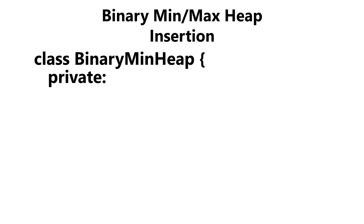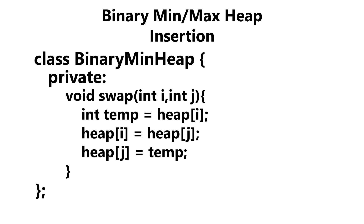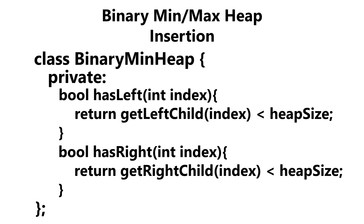We're going to have six helper methods. Our get left child method generates the left child index of the index we pass in. Our get right child method generates the right child index. Our get parent method gives us the parent index. Next, we have a simple swap method — we take in two indices and swap the data between them; this is used when we swap data between child and parent nodes when we heapify our tree. We also have has right and has left, which return true or false on whether a node has a left or right child.